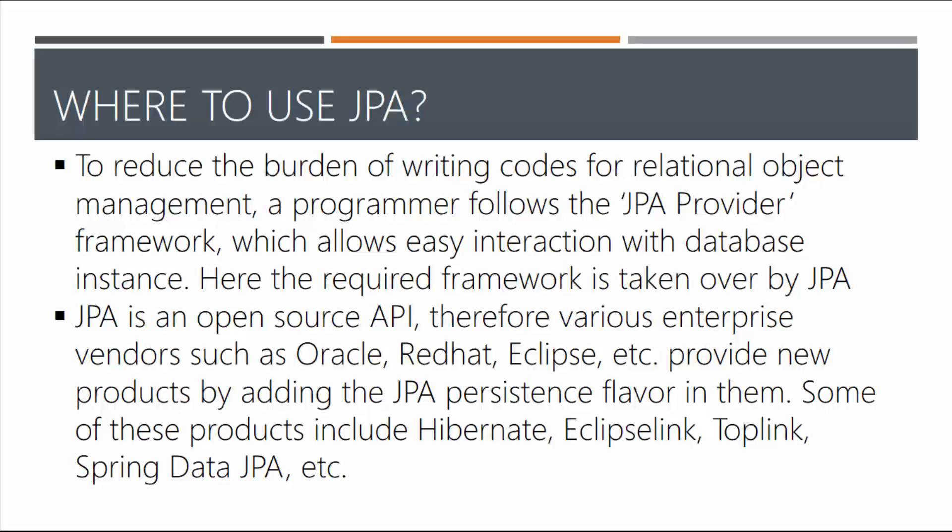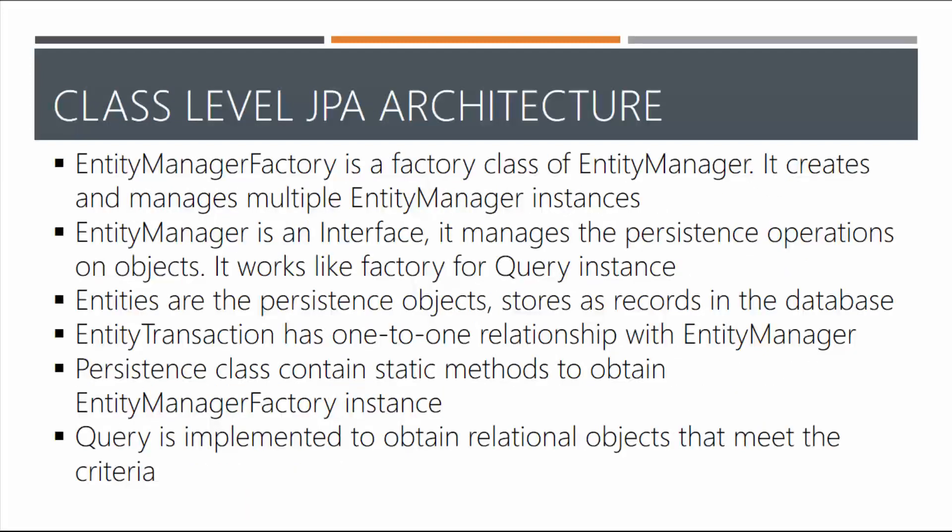Why do we use JPA? To reduce the burden of writing code for relational object management — JPA does it for you automatically. The programmer follows the JPA provider framework which allows easy interaction with the database instance. All you do is import a module in your Java program — 'import java.persistence' — and it will do the work for you. JPA is an open-source API, so various enterprise vendors such as Oracle, Red Hat, and Eclipse provide products adding JPA persistence. These include Hibernate, EclipseLink, TopLink, Spring Data, and others — and of course Hibernate is what we're focused on in this course.